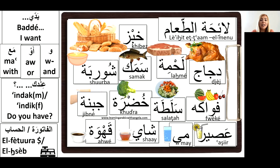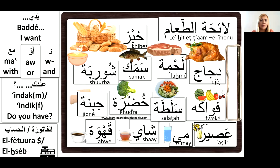'La'iha' is a list in Arabic. It is the formal word for 'akel,' meaning food — hence 'la'ihet el-akel,' the food list, or the menu. And obviously we also use the word 'menu' in Lebanese.